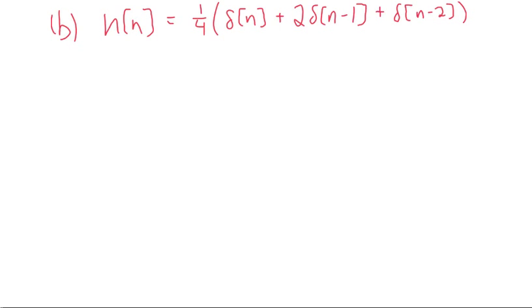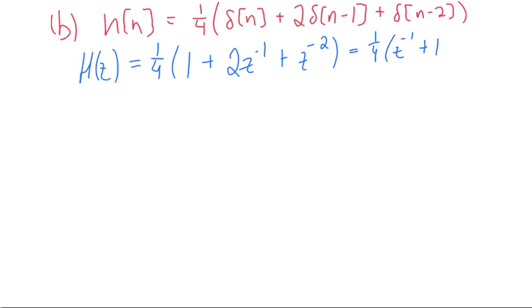For part B we were asked to find the frequency response of the system. It's a little easier taking the Z-transform of the impulse response and then converting that to the frequency response. So doing that we get h(z) equals one-fourth times (1 + 2z^(-1) + z^(-2)), which equals one-fourth times (z^(-1) + 1) squared.